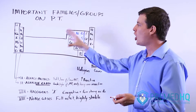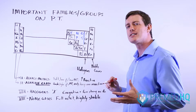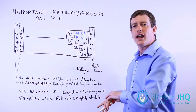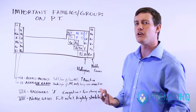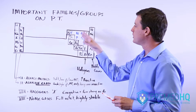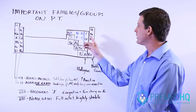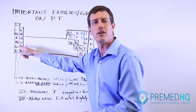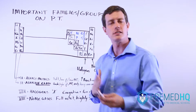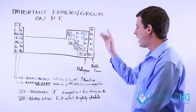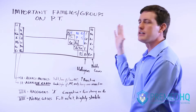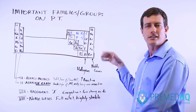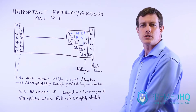Noble gases are essentially where all atoms want to get, because they have a complete octet — their s orbital and all p orbitals are filled, making them very stable. Many atoms ionize to reach that noble gas configuration, whether it's a halogen gaining an electron, an alkali metal losing one, or an alkaline earth metal losing two. Noble gases are highly stable, non-reactive, and represent the configuration that other atoms aspire to achieve.